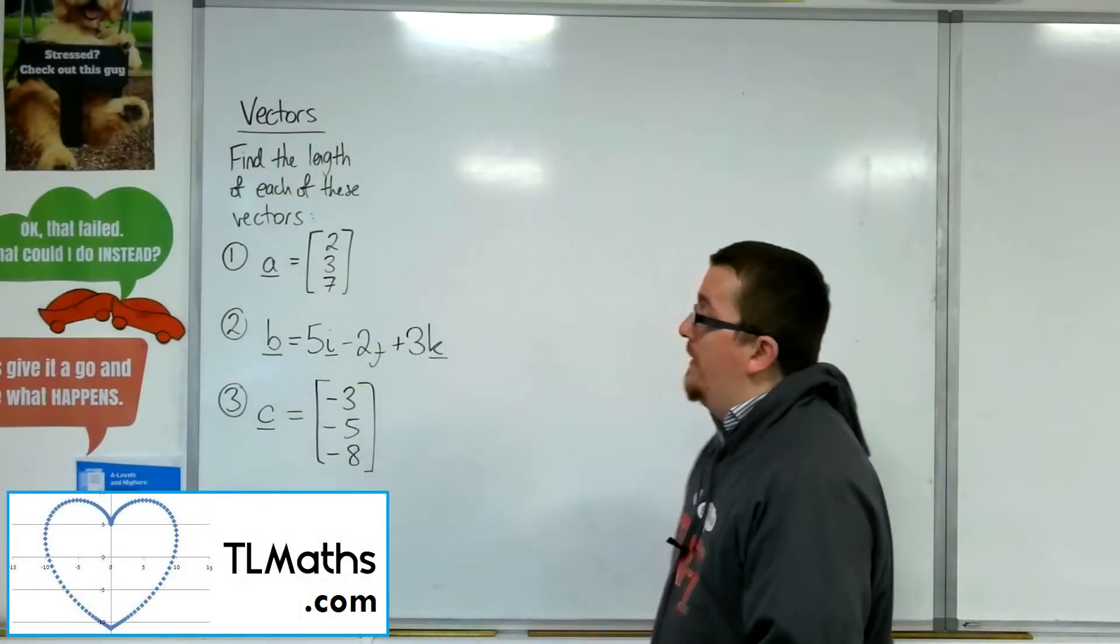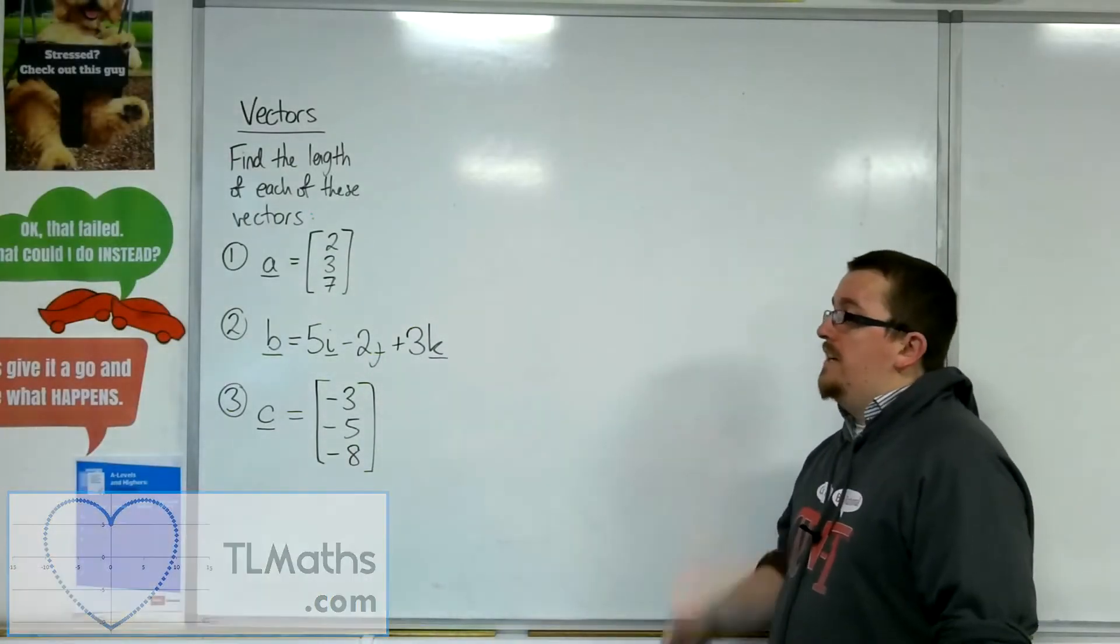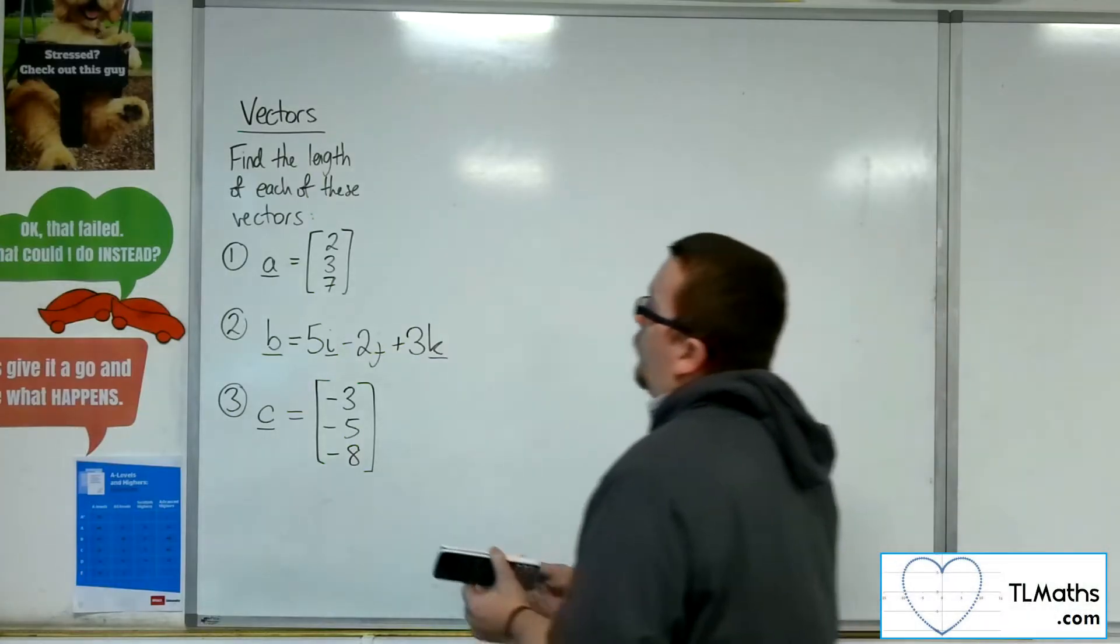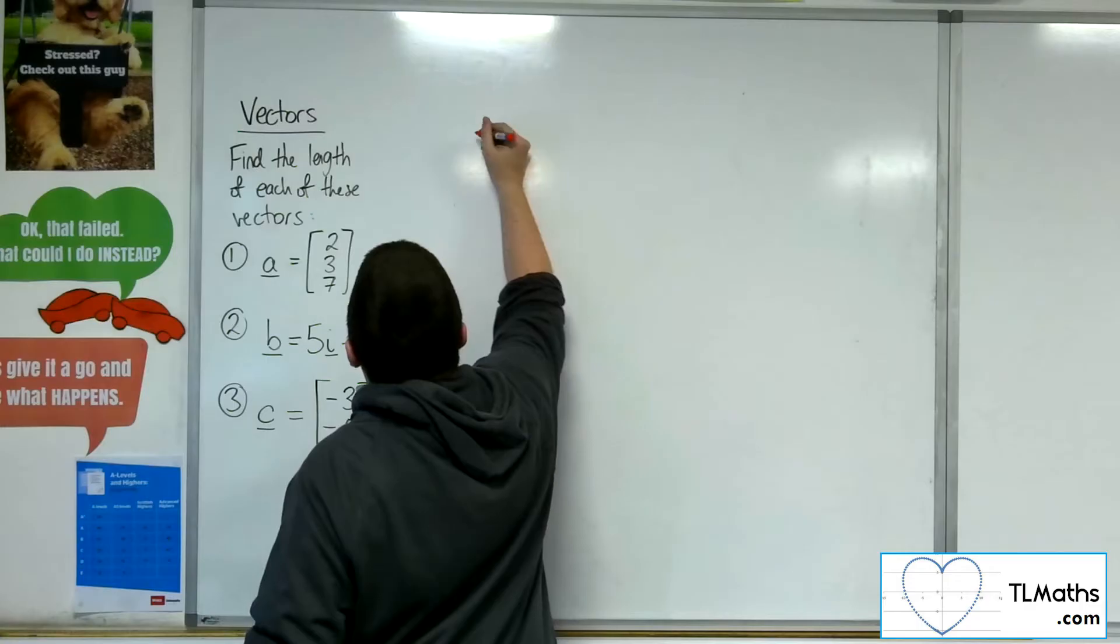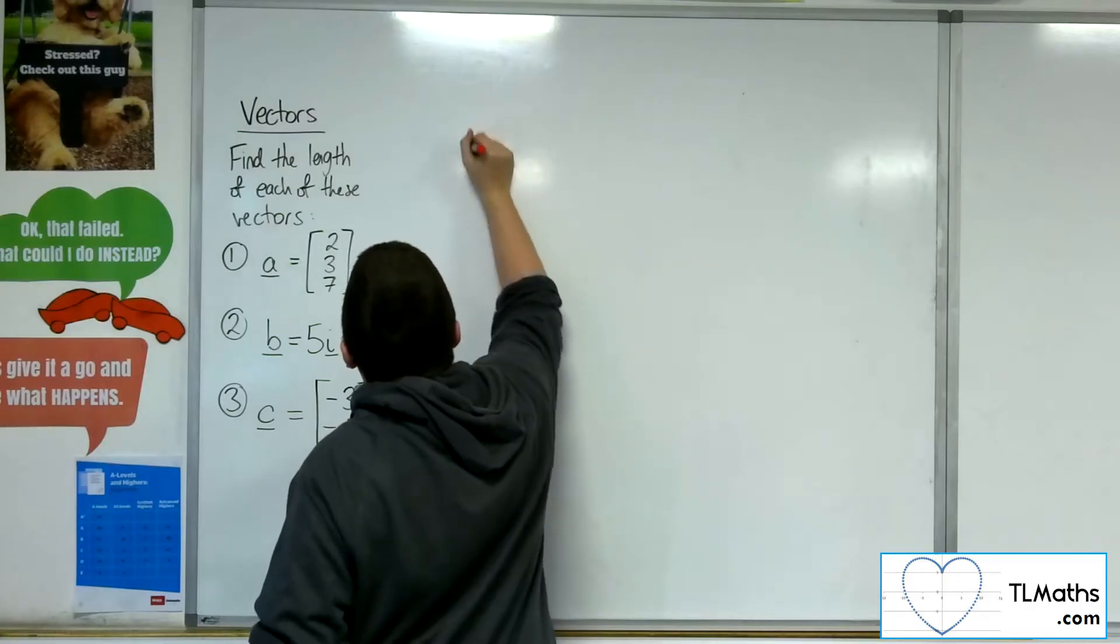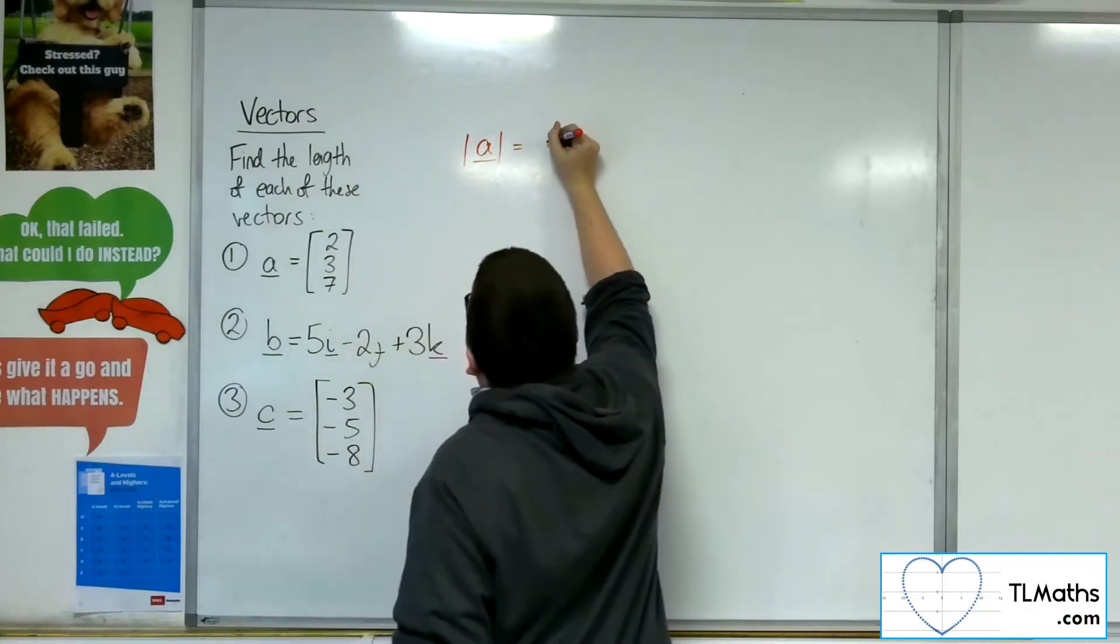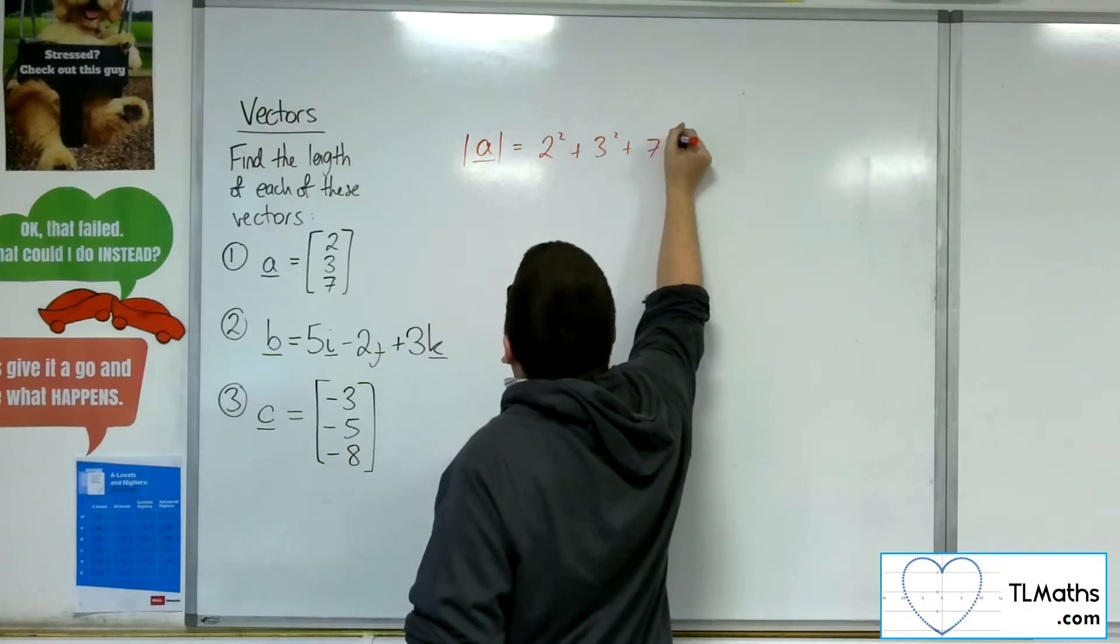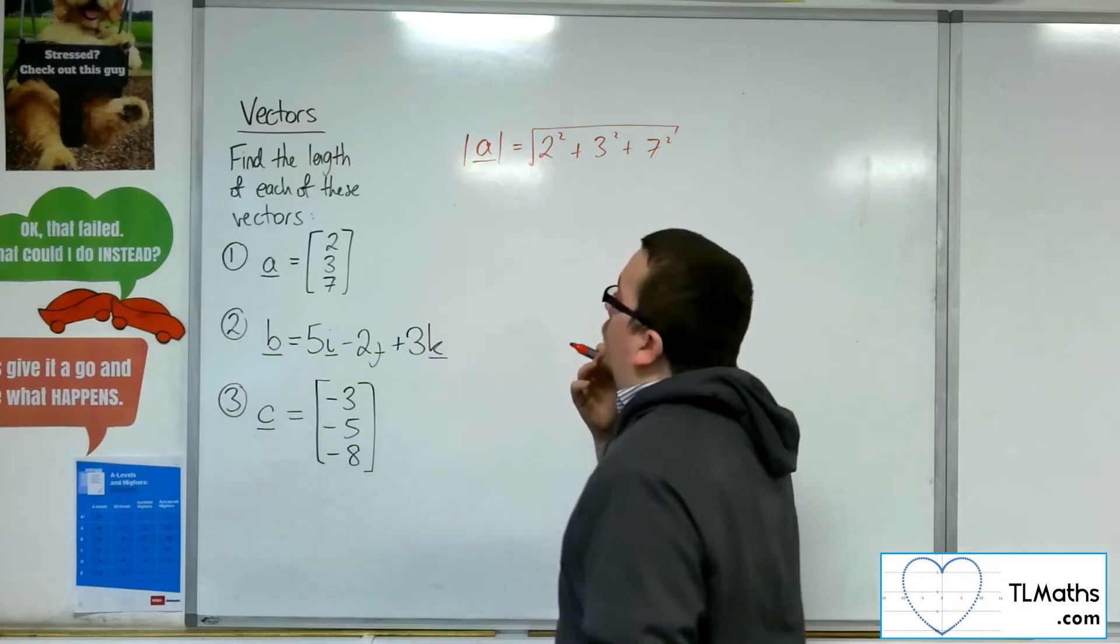OK, so let's say I want to find the length of these three-dimensional vectors. If we have a look at the first one, then the length or magnitude of A will be equal to 2 squared plus 3 squared plus 7 squared square rooted.